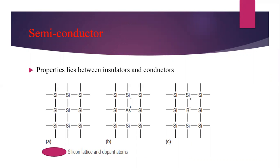In terms of energy bands, semiconducting materials have an almost empty conduction band and an almost filled valence band, with a very narrow energy gap separating the two. This semiconducting material has an almost filled valence band and almost empty conduction band. So there is no free electron under normal conditions. At zero Kelvin there are no electrons in the conduction band and the valence band is completely filled.